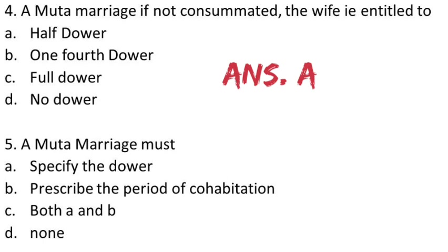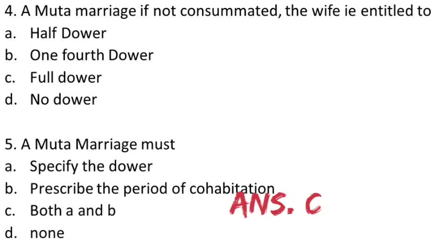Question 5: A Muta marriage must — (A) specify the dower, (B) prescribe the period of cohabitation, (C) both A and B, (D) none. A Muta marriage must specify the dower as well as prescribe the period of cohabitation. C is the answer.